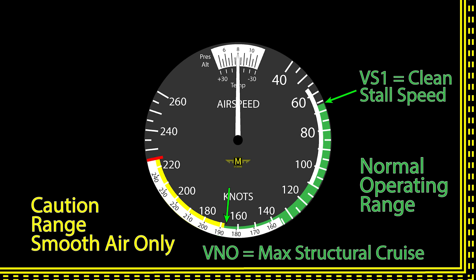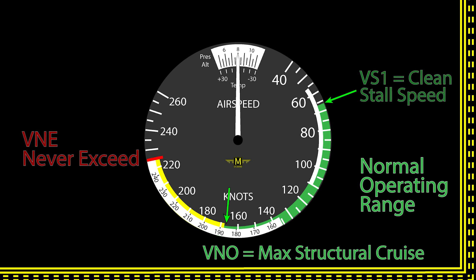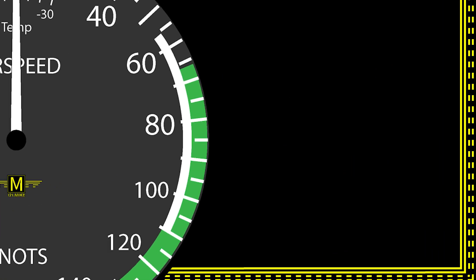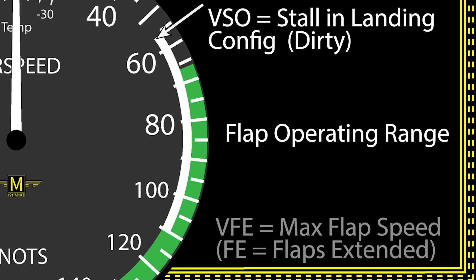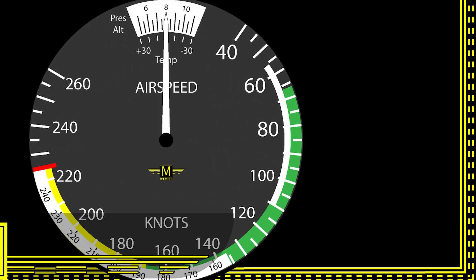The yellow arc is the caution range — don't fly in this area unless the air is very still. Red line is VNE, never exceed; structural damage can occur if you fly faster than that. The white arc deals with flaps. The bottom is VSO, the maximum weight stalling speed in landing configuration with gear and flaps down. The upper end of the white arc is VFE, flaps extended — you might damage your flaps if you fly faster than that with the flaps out.